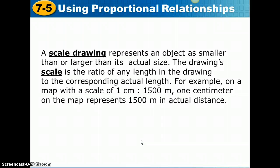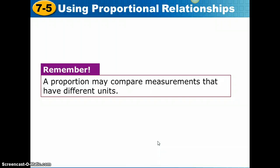Our next term, a scale drawing, is defined as a scale drawing represents an object as smaller than or larger than its actual size. The drawing's scale is the ratio of any length in the drawing to the corresponding actual length. For example, on a map with a scale of 1 centimeter to 1,500 meters, 1 centimeter on the map represents 1,500 meters in actual distance. Remember, a proportion may compare measurements that have different units. The units don't have to be converted when we're doing scale drawings.